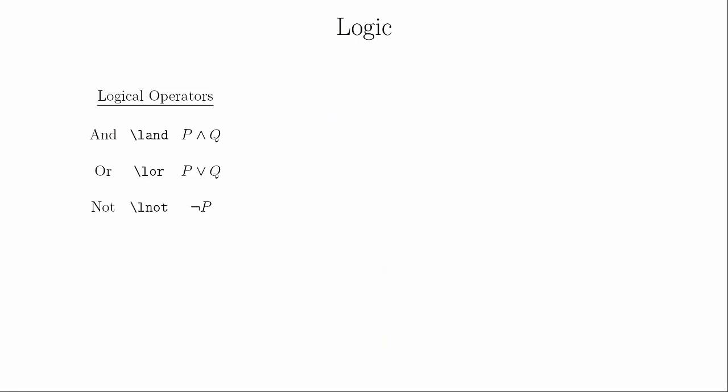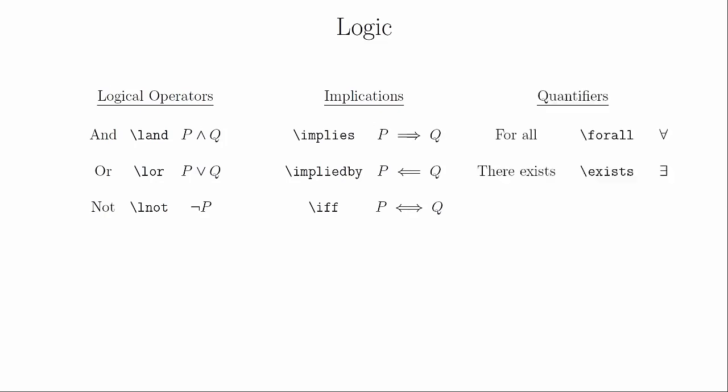This next set of symbols comes from logic. Here are the symbols for AND (\wedge), OR (\vee), and NOT (\neg). We also have both directions for the implication symbol and the biconditional symbol. Finally, we have the universal and existential quantifiers and the therefore symbol. This will take care of the majority of the symbols that you'll need. If you're taking a course in formal logic, there may be a few more, but you'll have to look those up when you get there.